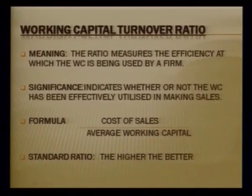The formula is cost of sales divided by average working capital. Average working capital is opening working capital plus closing working capital divided by two. There is no standard ratio, but higher is better. For working capital turnover ratio, you may use either sales or cost of goods sold — both are acceptable. However, for stock turnover ratio, always use only cost of goods sold.